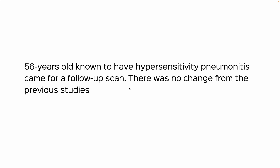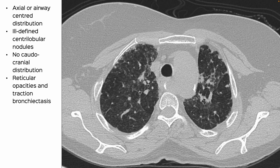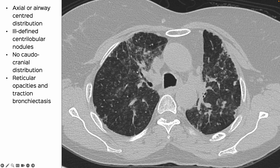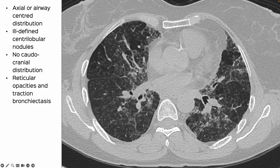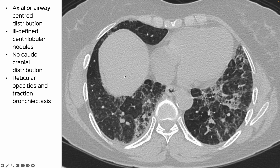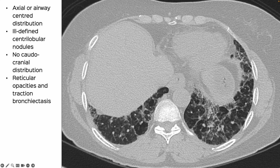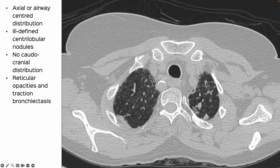This is a 56-year-old known to have hypersensitivity pneumonitis who came for a follow-up scan. There was no significant change from the previous studies. Using that new Ossirix tool to make videos, you can see these ill-defined centrilobular nodules, an axial peribronchovascular distribution pattern, the triple density sign here, and reticular opacities.